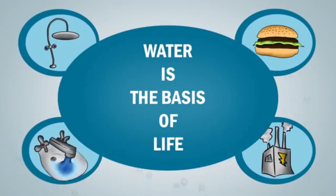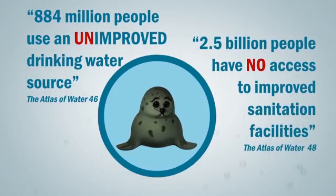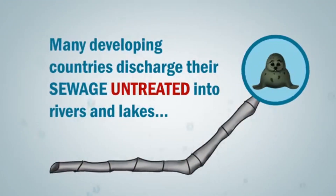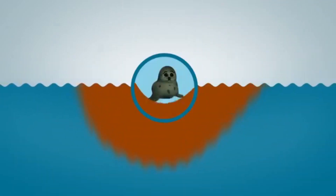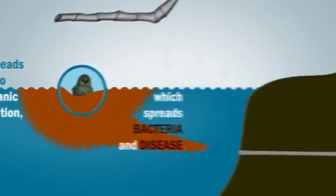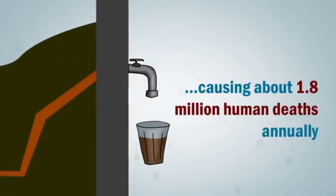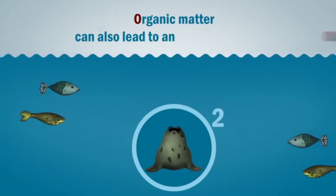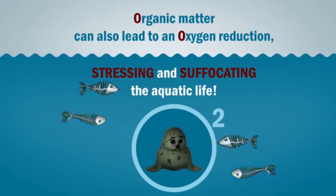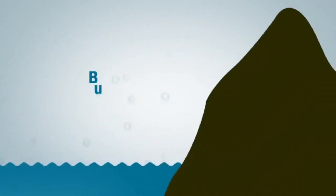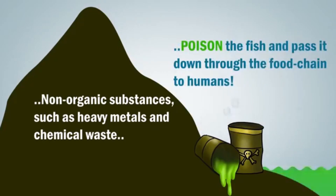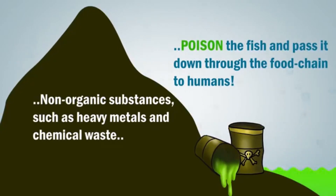Water is the basis of life. But 2.5 billion people have no access to improved sanitation facilities. Many developing countries discharge their sewage untreated into rivers and lakes. This leads to organic pollution which spreads bacteria and disease, causing about 1.8 million human deaths annually. Organic matter can also lead to an oxygen reduction, stressing and suffocating aquatic life. Non-organic substances such as heavy metals and chemical waste poison the fish and pass it down through the food chain to humans.